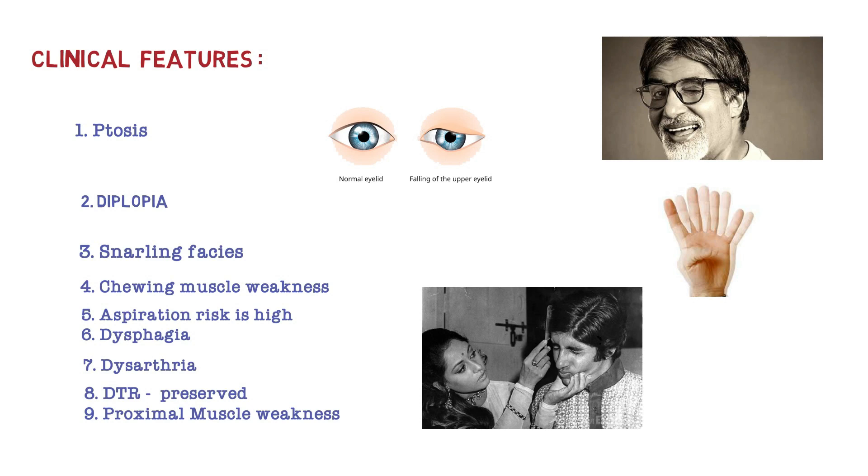So these are the important clinical features: ptosis, diplopia, snarling face, chewing muscle weakness, aspiration risk is high, dysphagia, dysarthria, DTR preserved, and proximal muscle weakness. But how can we diagnose this case?